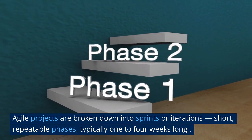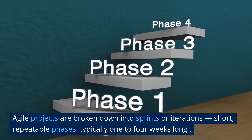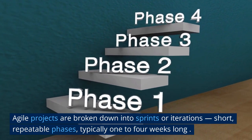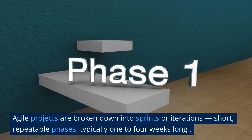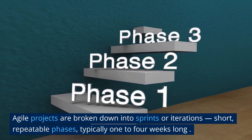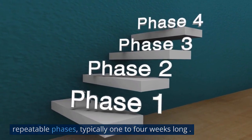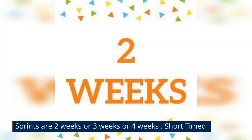Everything has to be done in the time frame — you need to develop the product, test the product, and release the product to production within that one, two, three, or four weeks, depending upon which sprint cycle your project has chosen. The most common sprint cycle is two weeks. This is the most commonly used, but it could be one, two, three, or four weeks. The most popular one is the two-week sprint cycle.